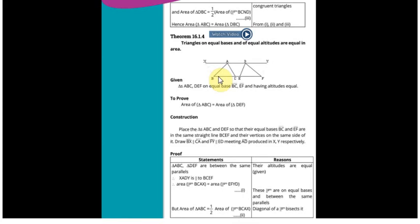Last theorem ki tarah hi hum yahan pe bhi karein ge ke triangle ABC jo hai wo half hai parallelogram BCAX kyunke BCAX ka jo diagonal hai wo hai AB. It should divide it into two equal areas so ABC is half the area of BCAX.